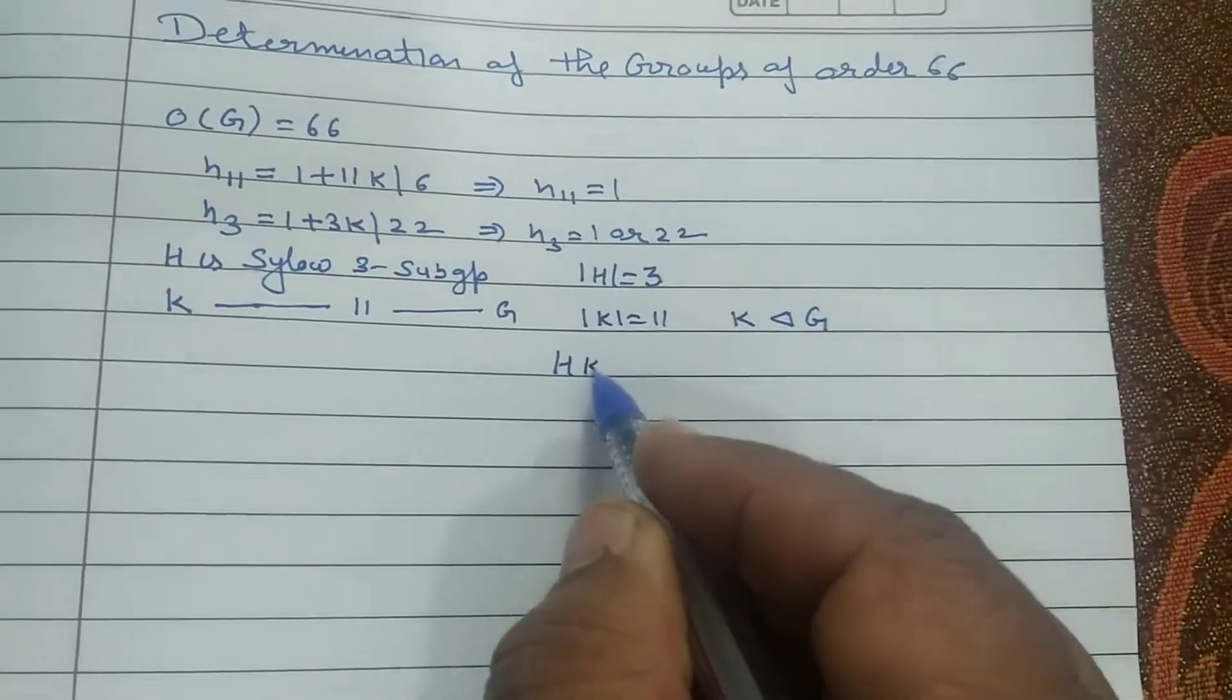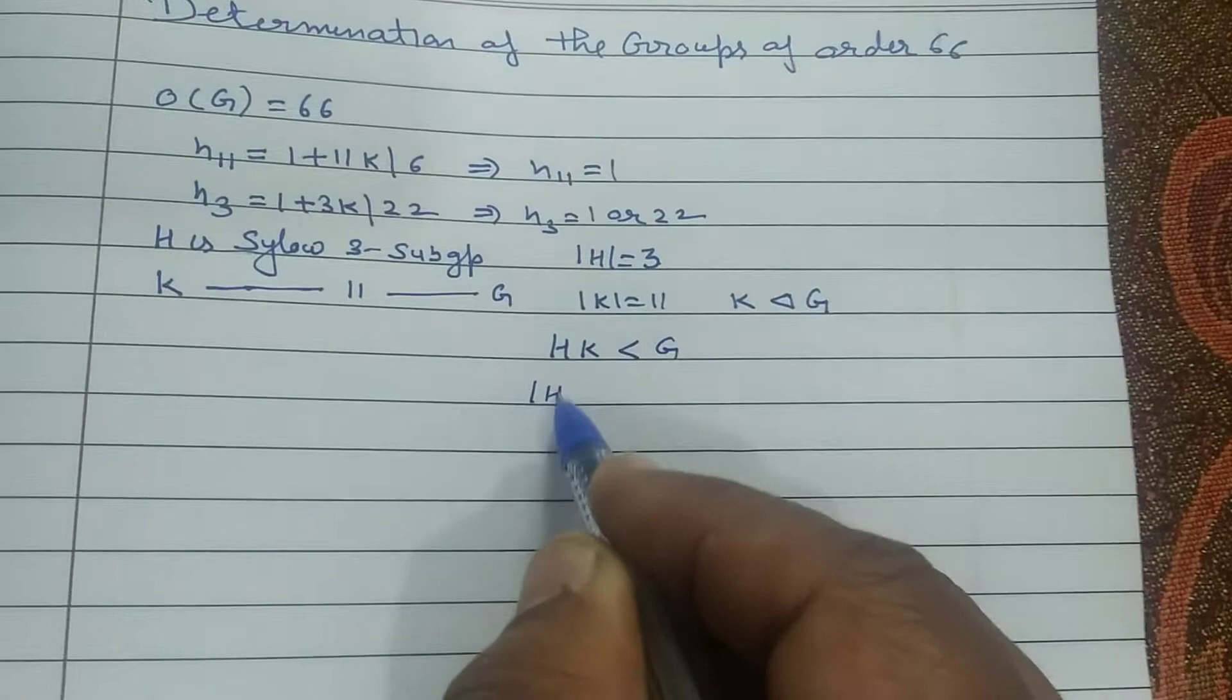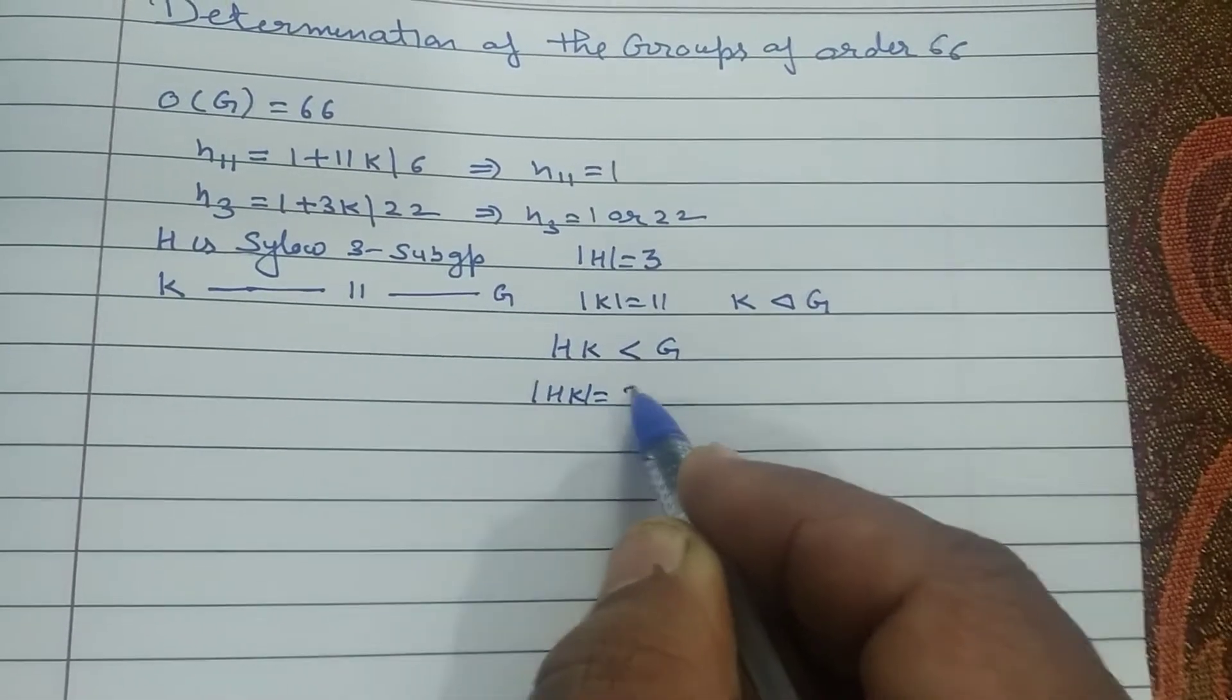Ek normal HK must be subgroup of G. What is the order of HK? HK order comes to be 33.